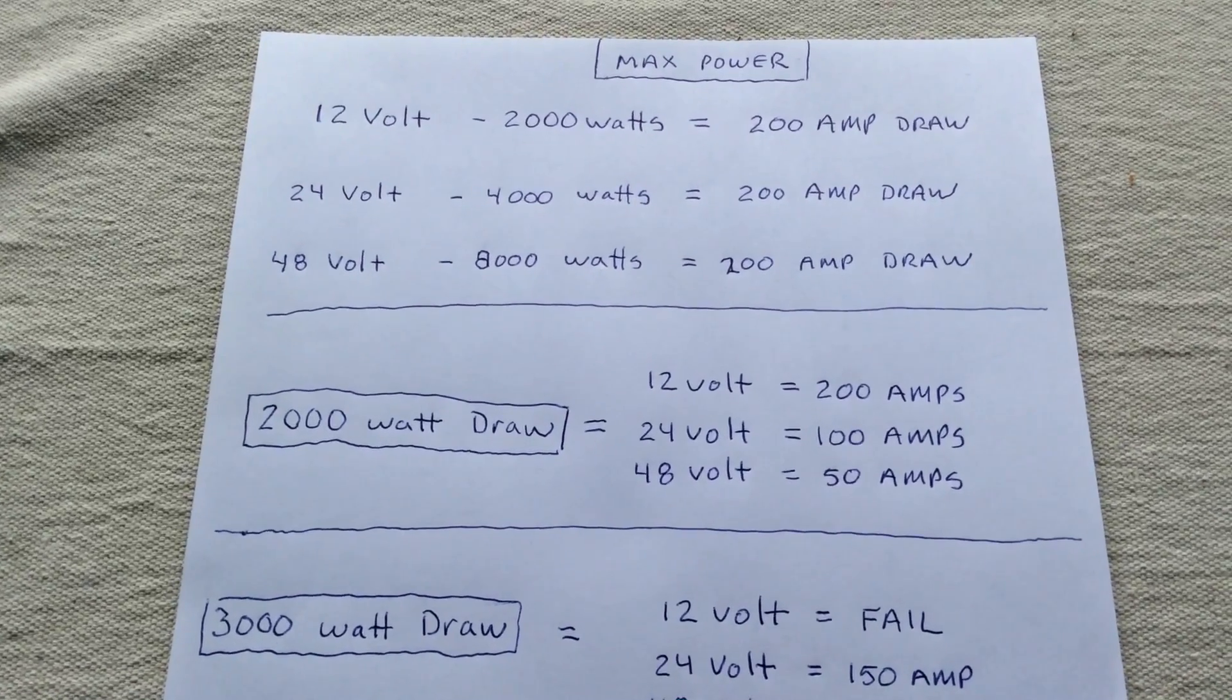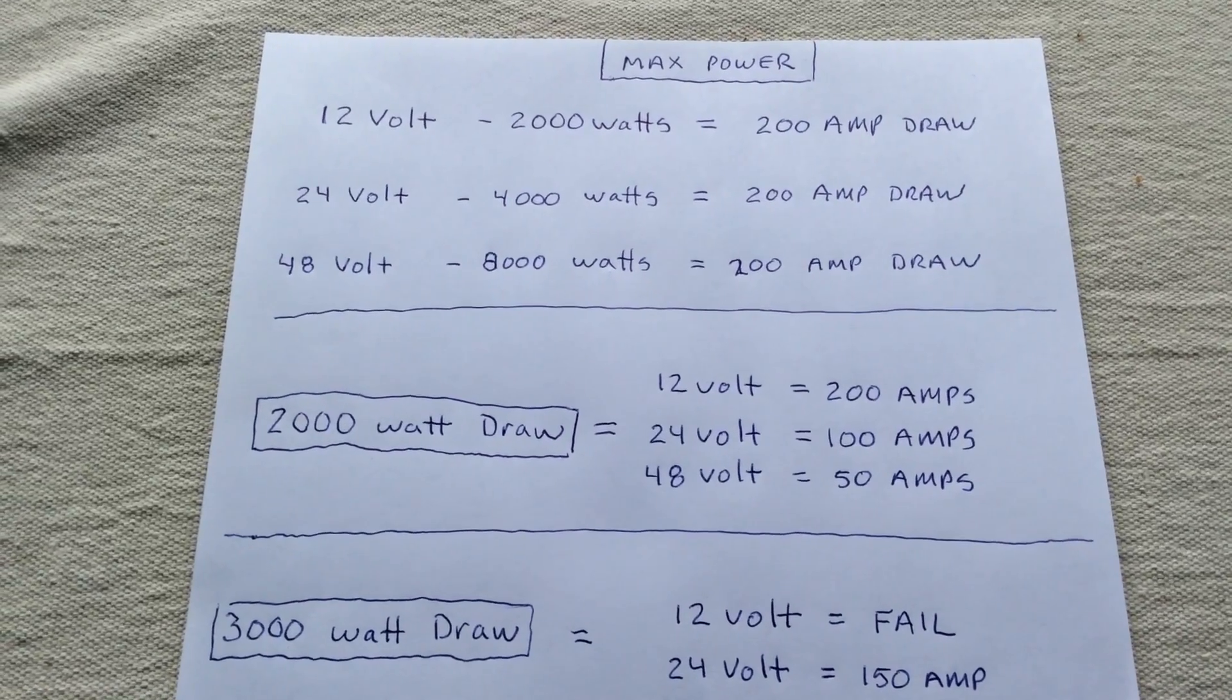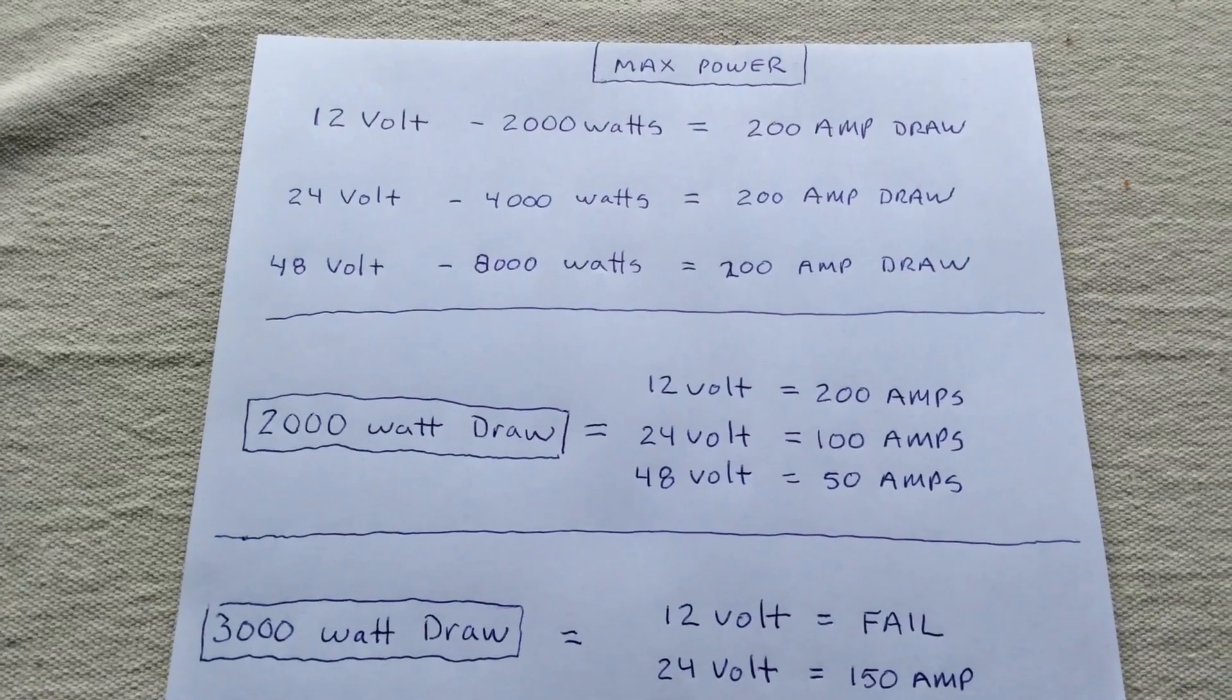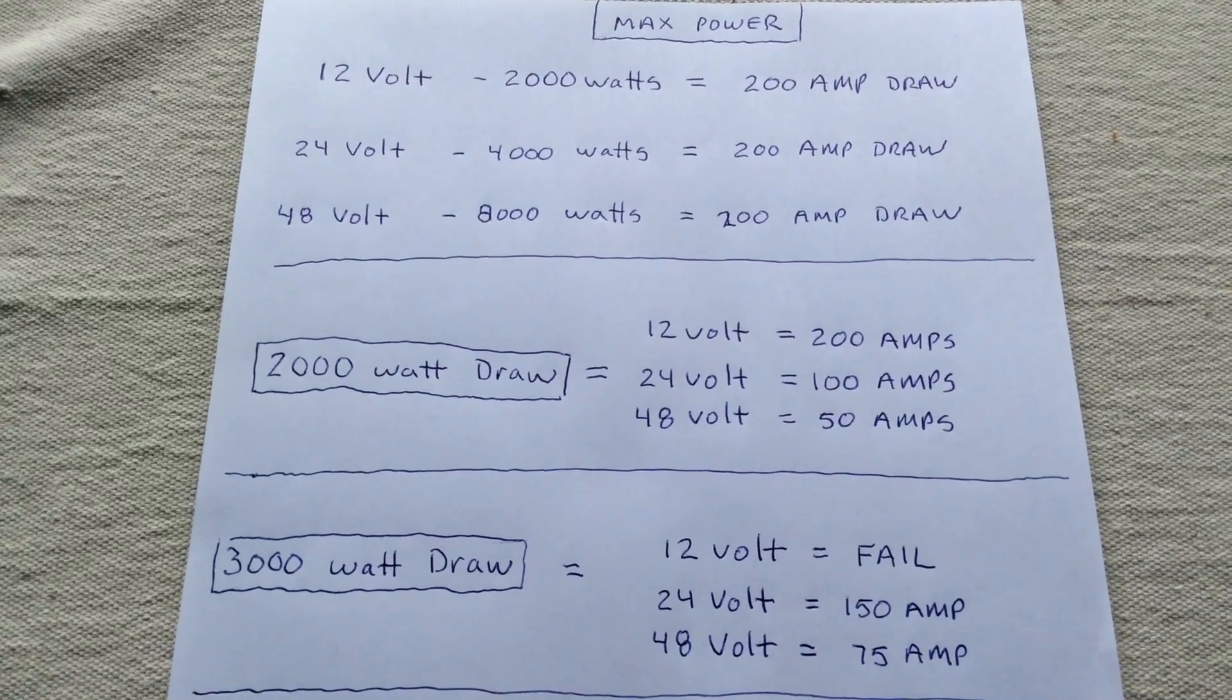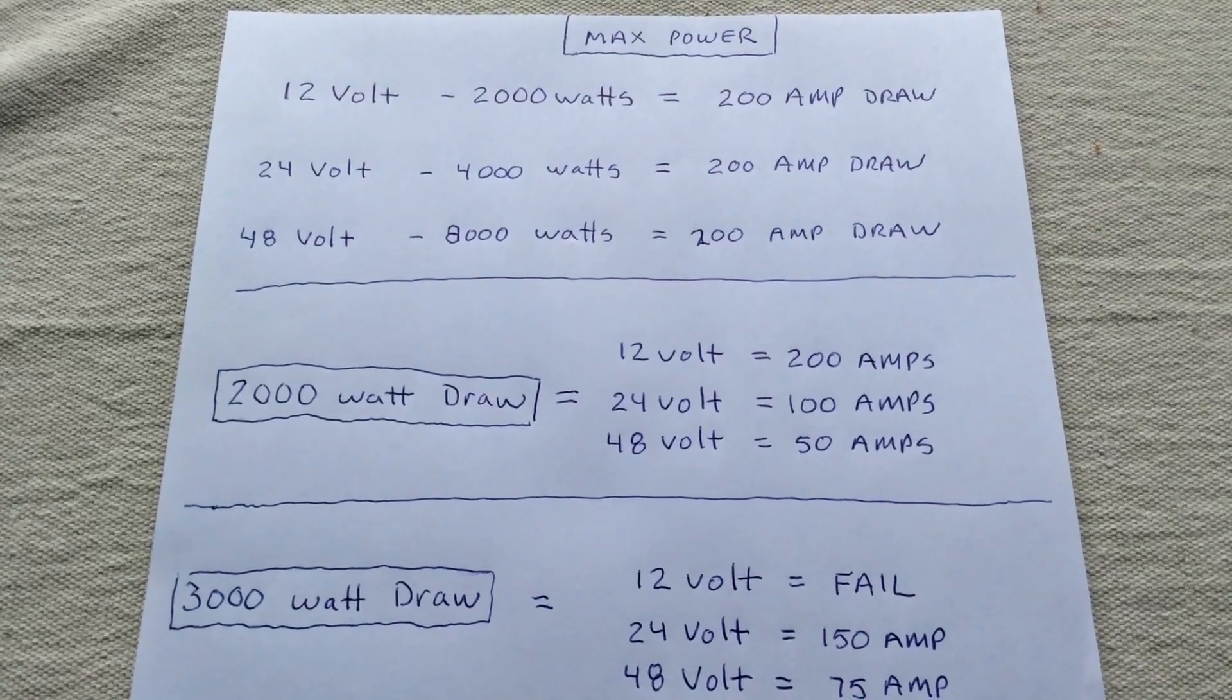24 volt, I can get a little bigger. I can go up to 4000 watts, which I'm not going to, but you can run a medium sized thing. If you're going to try and run the whole house, like I'm running my washing machine and the George Foreman grill and everything else, you better go 48.